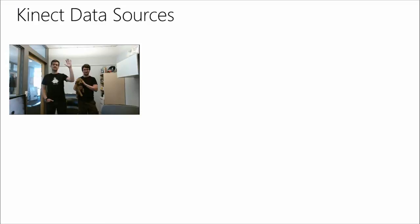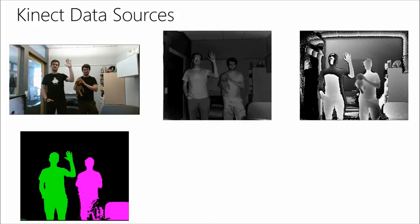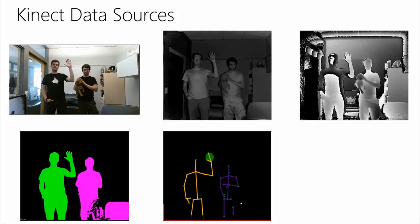On the Kinect data sources front, we have a variety of feeds. First is the color image — you can see developers and our team mascot. Next is the IR version of the same image. The depth map is much cleaner than anything we've had before. Then there's the body index mask, a higher-level feed that tells you which pixels contain tracked players. Next is skeleton data — a 25-joint skeleton per person with hand states. Finally, we have audio with a multi-mic array and sound source localization.